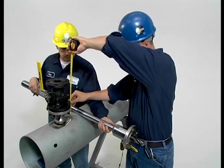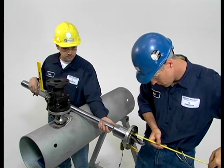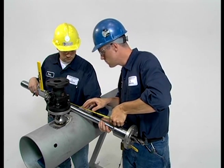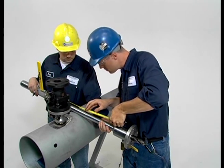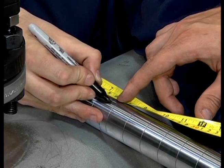A hot tap drilling machine is required for the next operation. They are available from TD Williamson and other manufacturers. Make a mark on the hot tap drill bit at a point that will assure full penetration of the pipe wall, but not any further into the pipe than necessary.